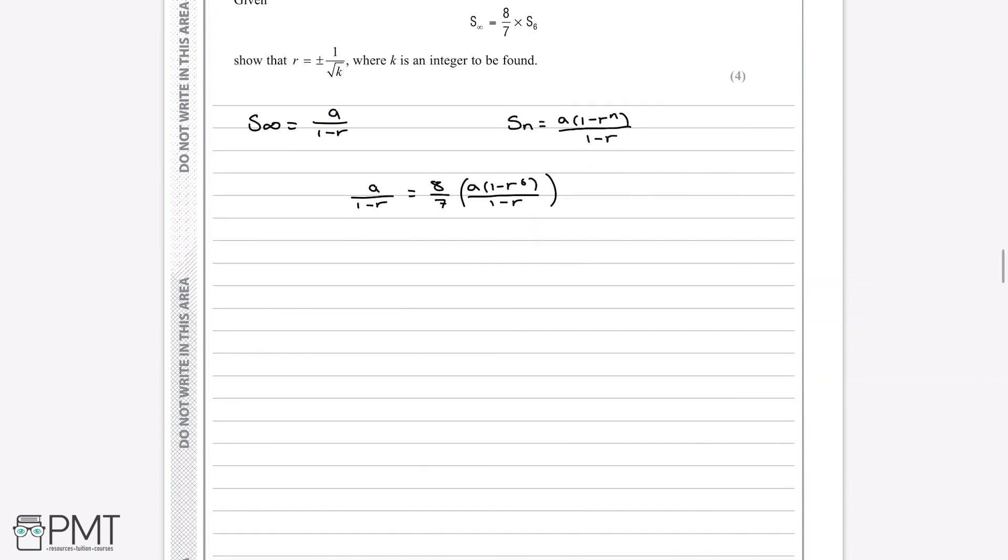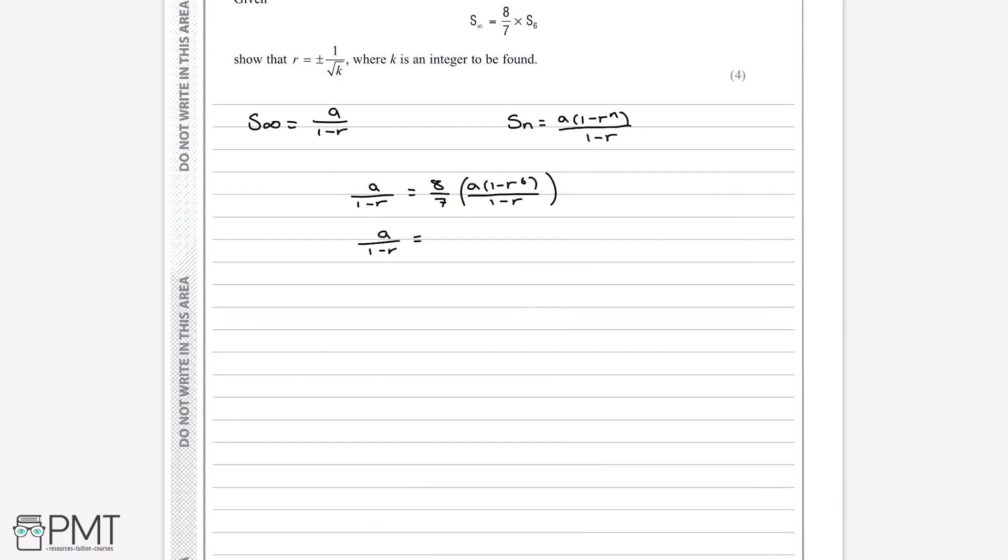Now if we simplify this formula, we can start by multiplying out the brackets on the right hand side. So we'll have 8a(1-r^6) all over 7(1-r). You can see on both sides there's a 1-r in the denominator, so if we multiply both sides by 1-r, these cancel out and we're left with a = 8a(1-r^6)/7.